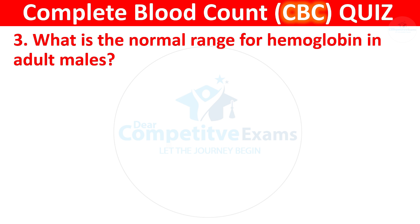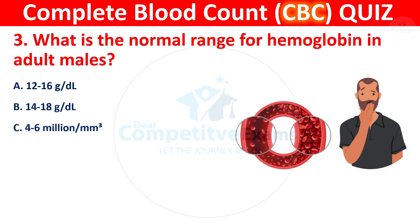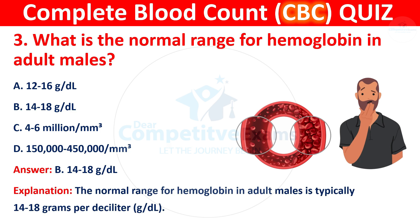Question 3: What is the normal range for hemoglobin in adult males? Your options are 12–16 grams per deciliter, 14–18 grams per deciliter, 4–6 million, or 450,000. The correct answer is 14–18 grams per deciliter. The normal range for hemoglobin in adult males is typically 14–18 grams per deciliter.